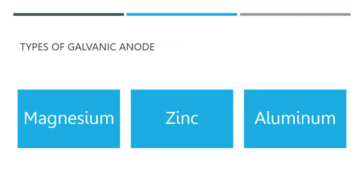Three substances are frequently employed as galvanic anodes: zinc, aluminum alloy, and magnesium. There are various grades or sorts of each substance, and each variety comes in a wide range of sizes and shapes.